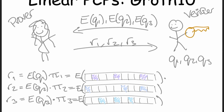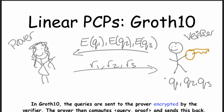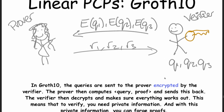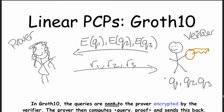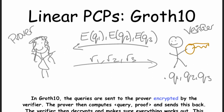The prover sends over the results, which the verifier with his giant key can then decrypt. He will then be able to do the actual verification in the clear. The decryption of something multiplied by an encryption of something else decrypted would be the multiplication of those things in the clear — so the verifier can just verify everything in the clear.